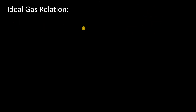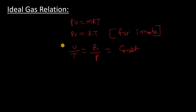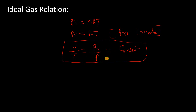Now we will discuss the ideal gas relation. We know the ideal gas law: PV = nRT. For one mole, this becomes PV = RT. For an isobaric process, V/T = R/P, which is constant. So the ideal gas relation for the isobaric process is: V/T = R/P = constant.